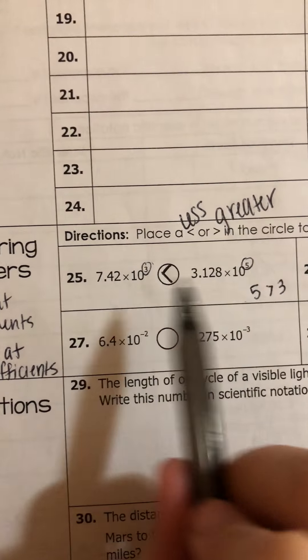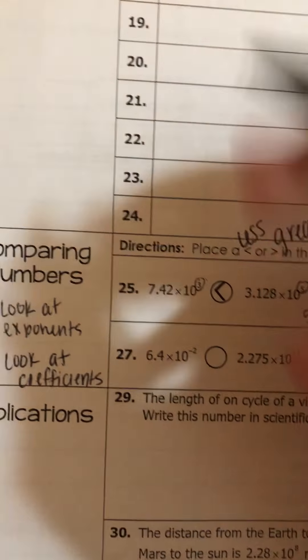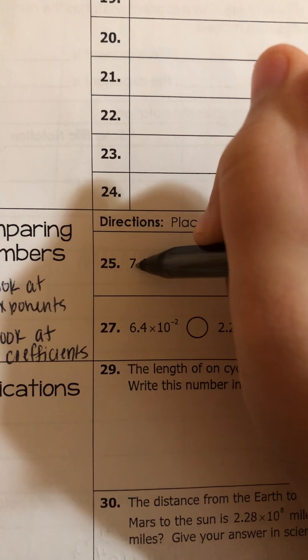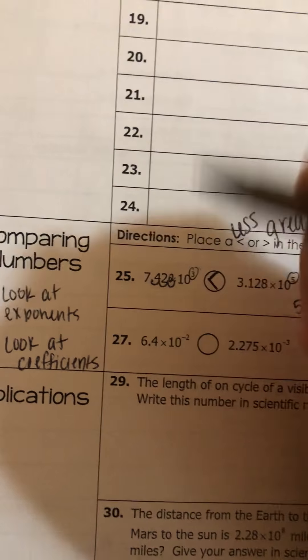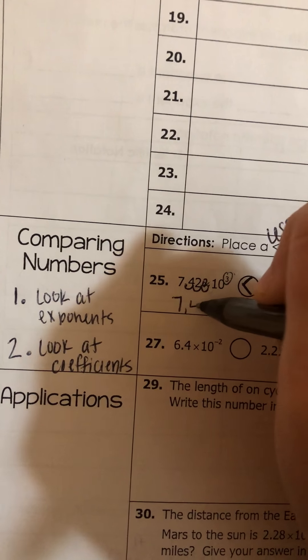Another way to check this is to convert these to standard form. So 7.42 times 10 to the 3rd would be 3 swoops to the right, and then fill in with the 0.